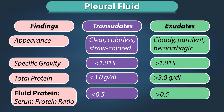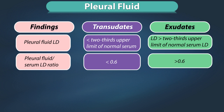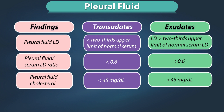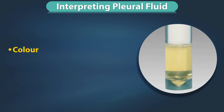The fluid protein to serum protein ratio is less than 0.5 in a transudate and more than 0.5 in an exudate. Pleural fluid lactate dehydrogenase is less than 2/3 the upper limit of normal serum in a transudate and more than 2/3 in an exudate. Pleural fluid to serum lactate dehydrogenase ratio is less than 0.6 in a transudate and more than 0.6 in an exudate. Pleural fluid cholesterol is less than 45 mg per deciliter in a transudate and more than 45 mg per deciliter in an exudate. Pleural fluid to serum cholesterol ratio is less than 0.3 in a transudate and more than 0.3 in an exudate.